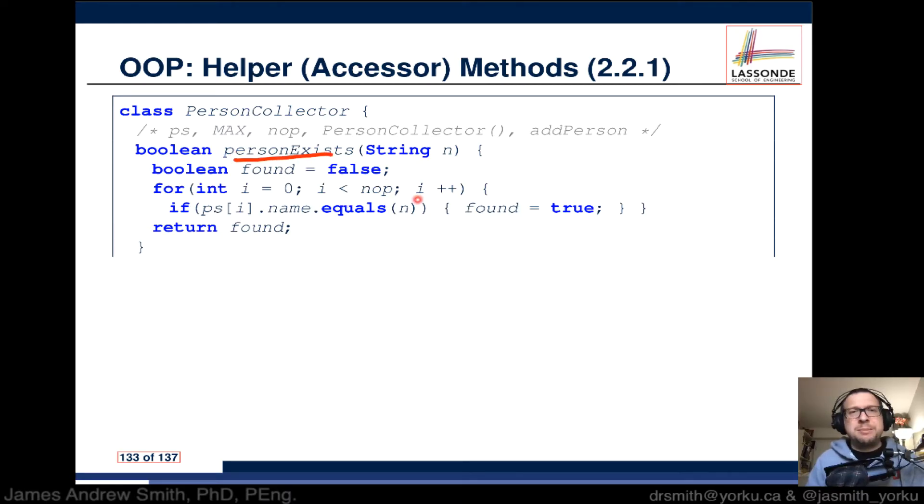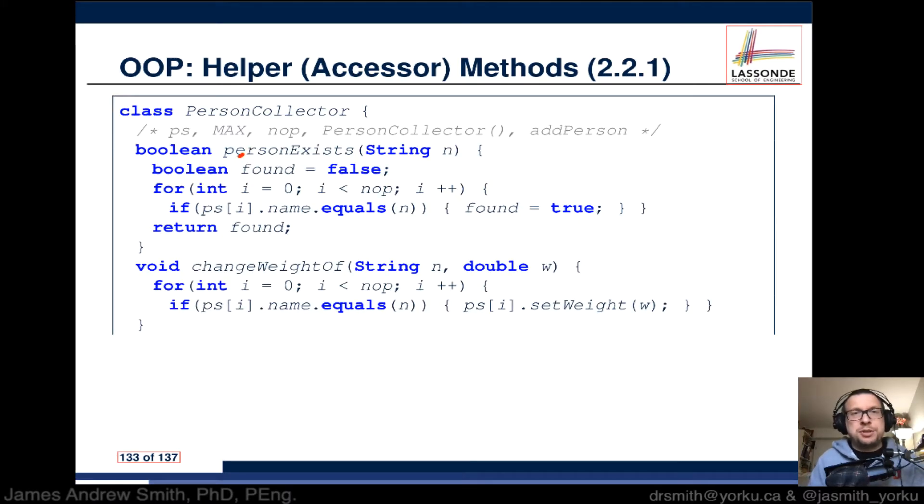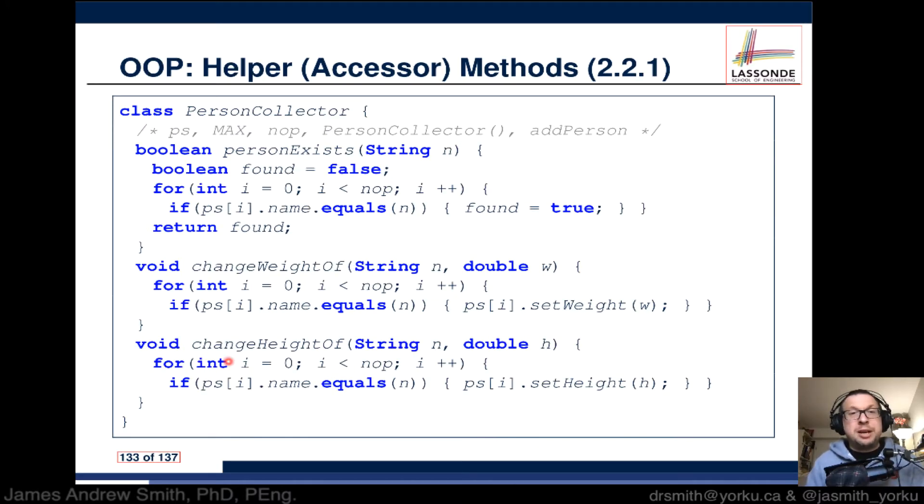We want something called person exists. This is a method with an input string called n, and we've got this for loop inside. Next we have change weight of, which takes two input arguments, a string and a double precision floating point number, and we have another for loop.